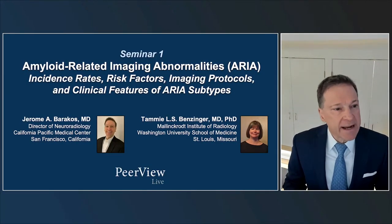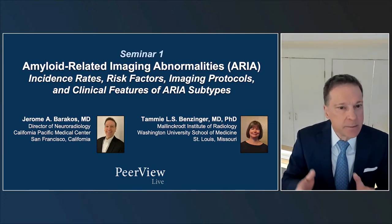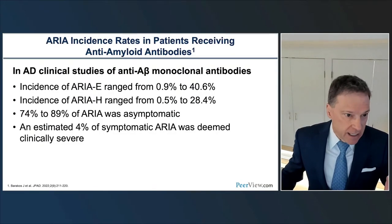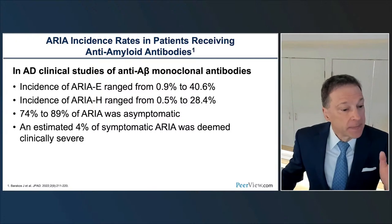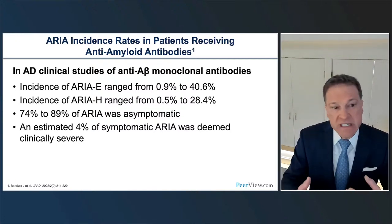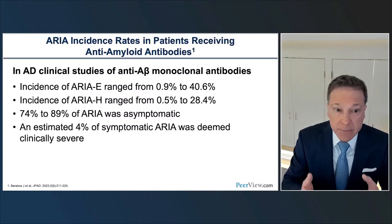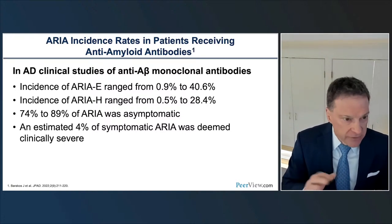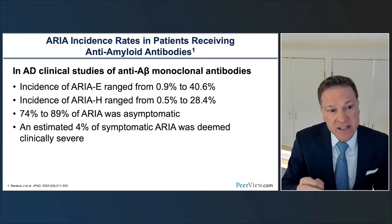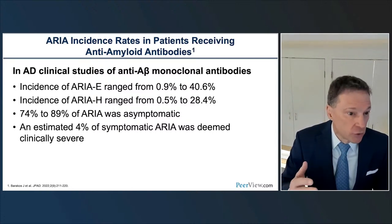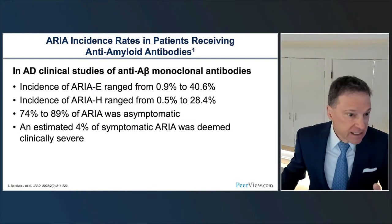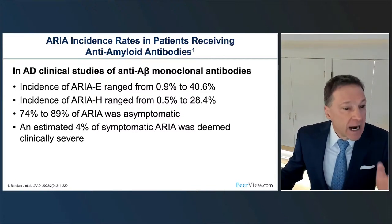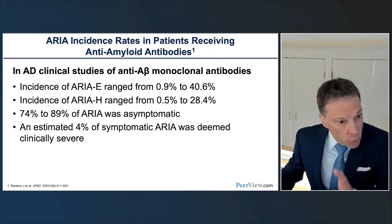When we look at the incidence of amyloid-related imaging changes, they vary with different monoclonal antibodies. We have ARIA-E and ARIA-H. E refers to the edematous form—edema in the brain tissue or leptomeningeal effusions. The H form refers to hemosiderin-related changes, manifesting as lobar microhemorrhages or superficial leptomeningeal siderosis. The incidence for ARIA-E can range from as low as 1% to up to 40% of patients. ARIA-H can range from about 1% to about 28%.